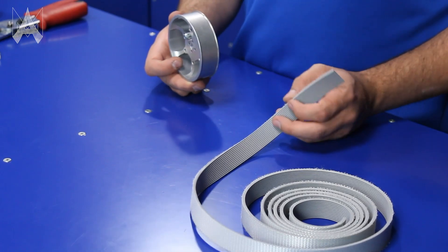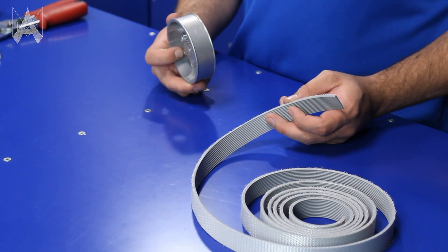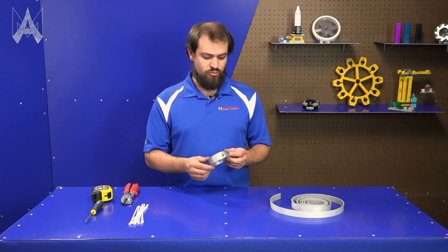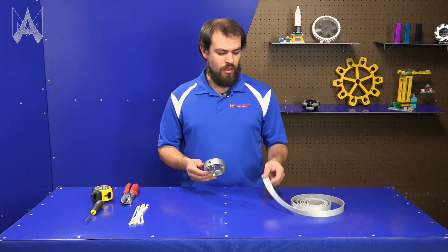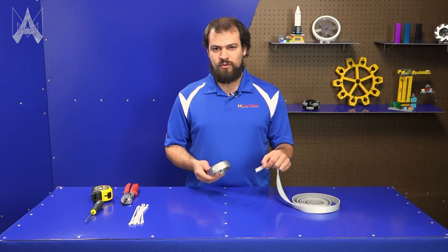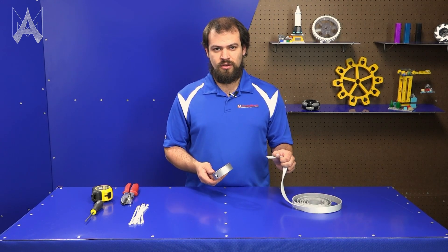One wheel should last you basically the life of your team. These are solid aluminum, pretty indestructible in FTC. The only thing that's going to wear out is the tread which is replaceable and we're going to show you how to do that today.